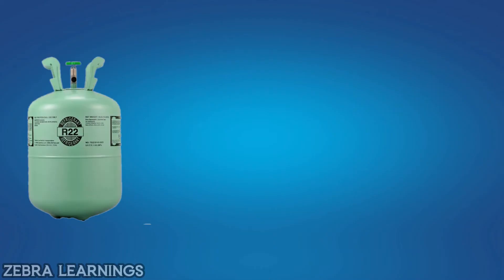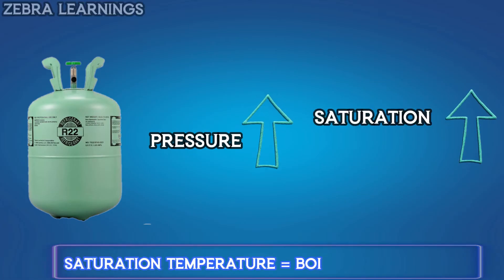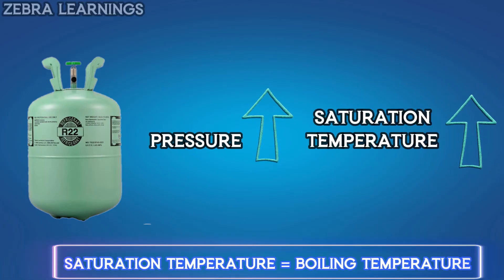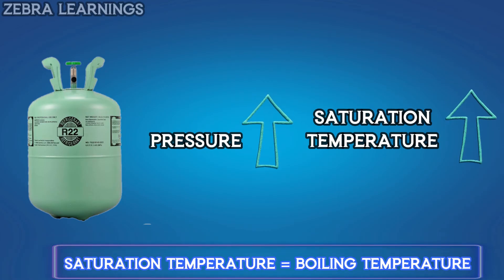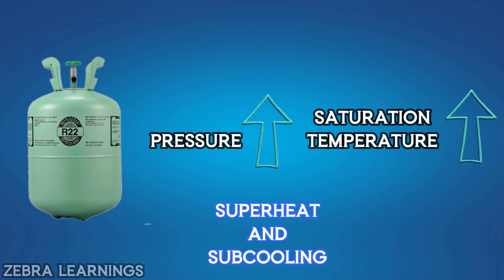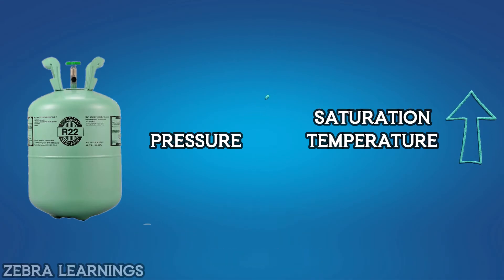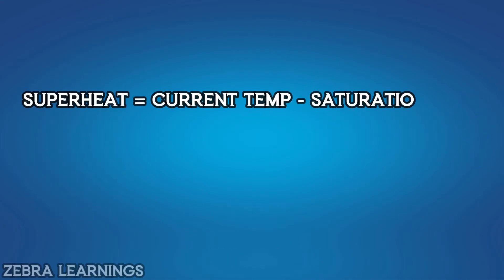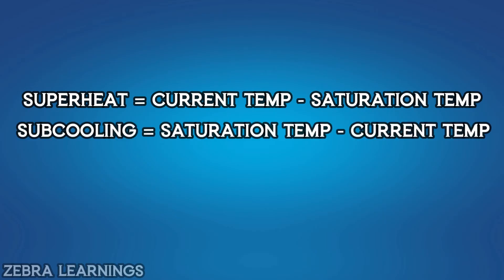The same concept applies to refrigerants: as pressure increases, the saturation temperature of the refrigerant also increases. The saturation temperature of a refrigerant is helpful in detecting the values of superheat and subcooling. Superheat equals current temperature minus saturation temperature. Subcooling equals saturation temperature minus current temperature.